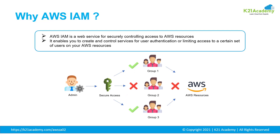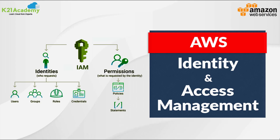If you see this picture, we have an IAM administrator who is trying to allocate permissions to different groups of people — Group 1, Group 2, and Group 3. The administrator using IAM is empowered to allow access for certain groups to certain resources. That's what IAM is all about.